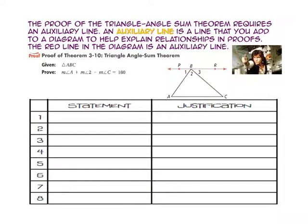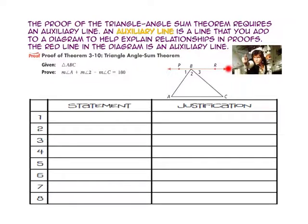The proof of the triangle angle sum theorem requires an auxiliary line. An auxiliary line is a line that you add to a diagram to help explain relationships and proofs. The red line in the diagram is an auxiliary line. To prove the triangle angle sum theorem, we are going to start with the given triangle ABC, then draw an auxiliary line through point B that is parallel to side AC using the parallel postulate.